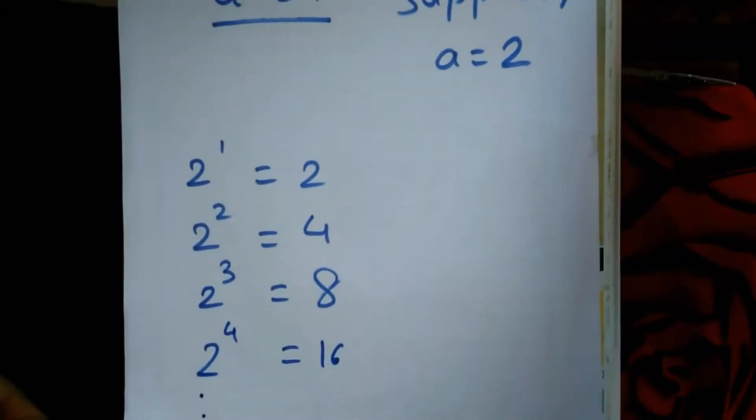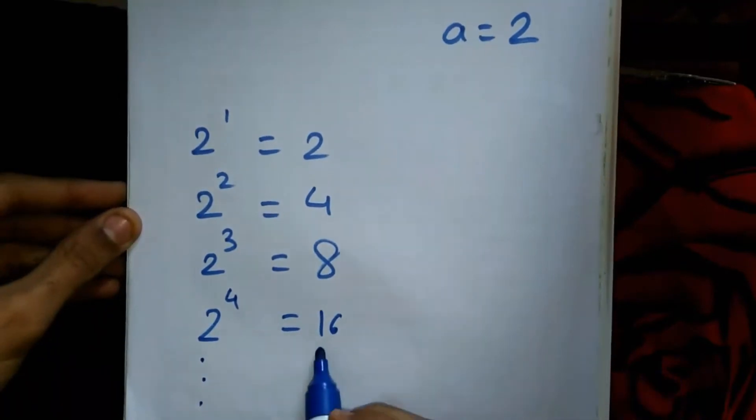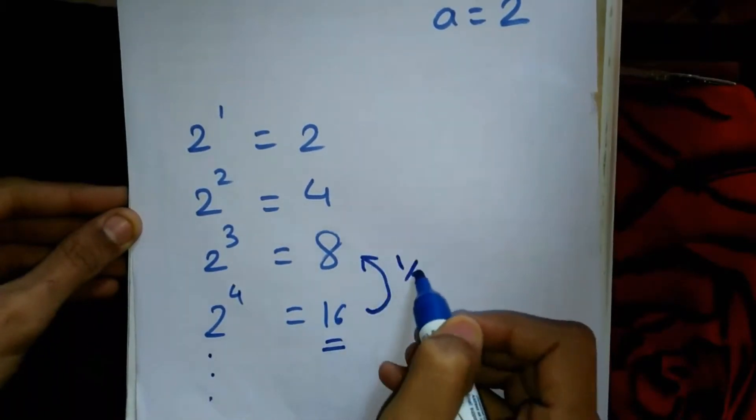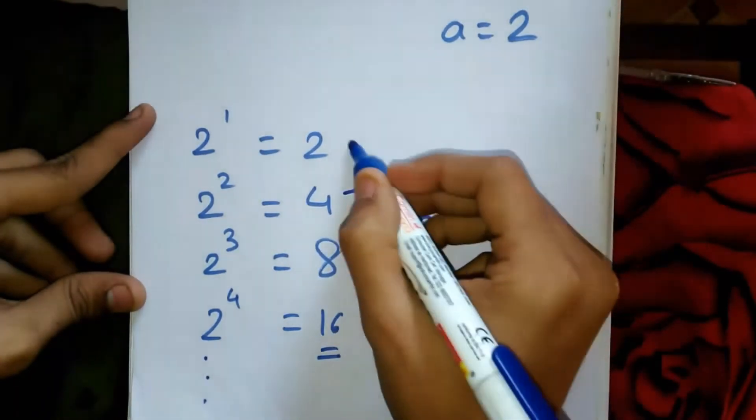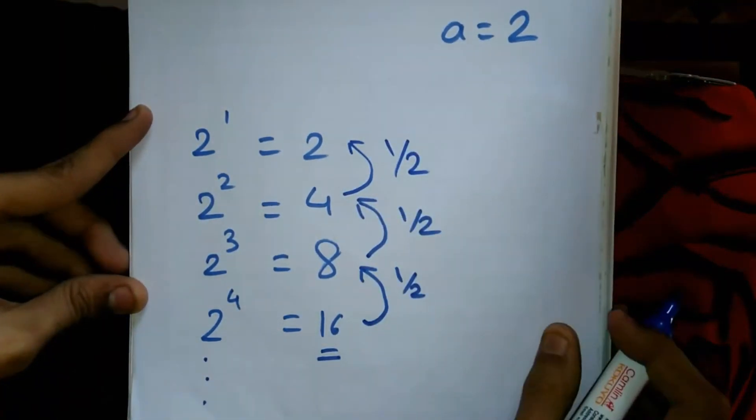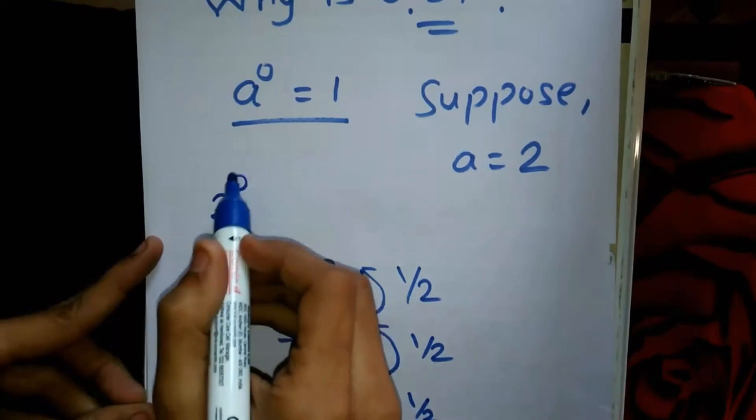When 16 is divided by 2, we get 2^3. When 8 is divided by 2, we get 2^2. When 4 is divided by 2, we get 2^1, and 2^0 equals...